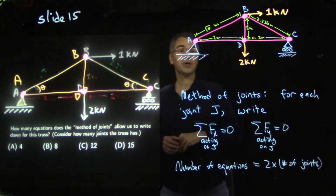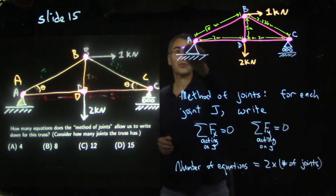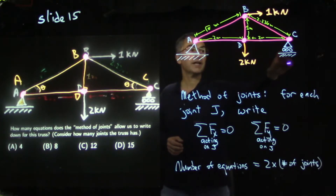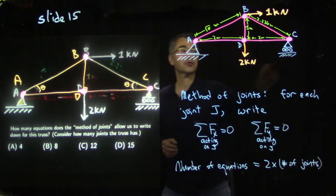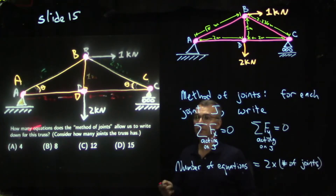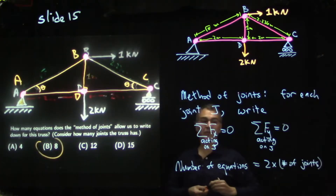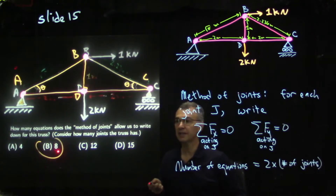We will see that it is possible to write a torque equation for the truss as a whole, which lets us solve for the reaction forces that externally support the truss on the ground. So how many equations does the method of joints allow for this truss? We have four joints, so two times four gives eight equations. So the answer is B — eight equations.